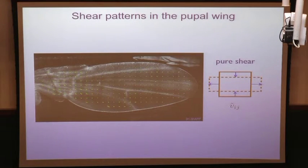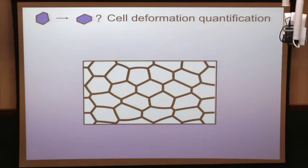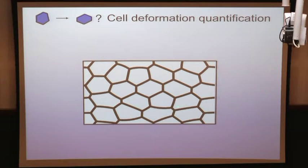Now, we also want to describe cell shape. Looking at each cell, we want to know whether it is round or elongated.